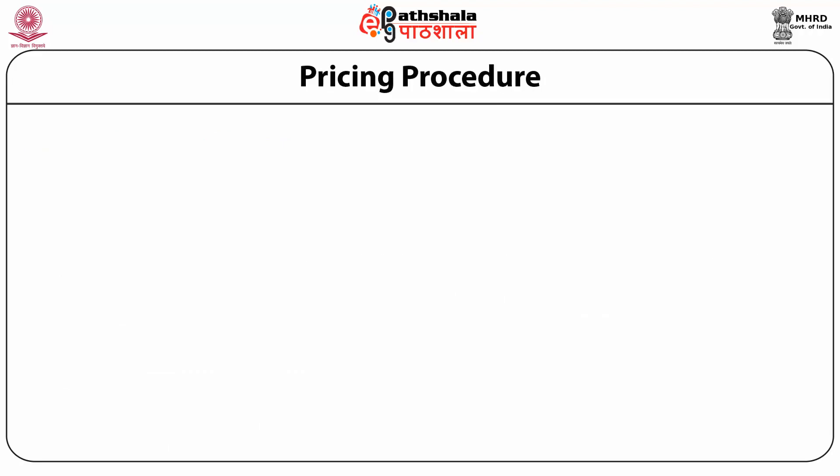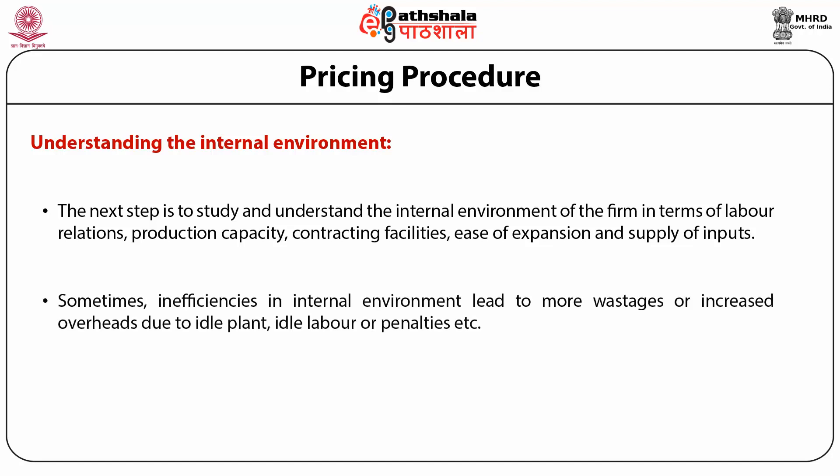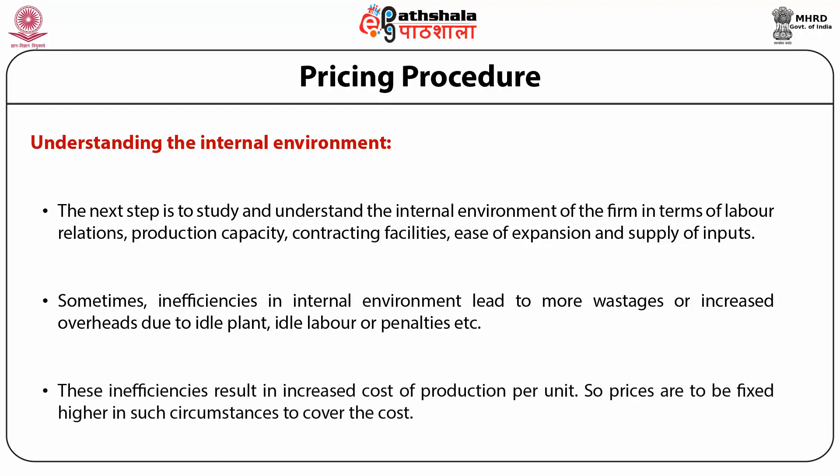The next step is to study and understand the internal environment of the firm in terms of labor relations, production capacity, contracting facilities, ease of expansion, and supply of inputs. Inefficiencies in the internal environment may lead to more wastages or increased overheads due to idle plant, idle labor, or penalties, resulting in increased cost of production per unit. Prices are to be fixed higher in such circumstances just to cover the cost.